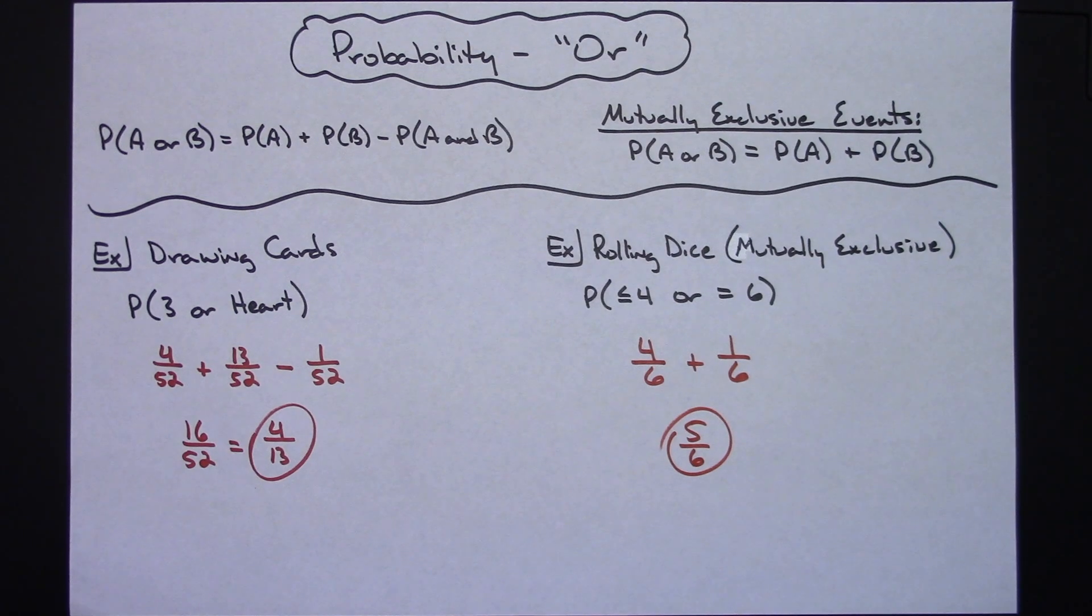So definitely two just really straightforward easy examples dealing with that OR and dealing with the two different types of OR formulas, one being mutually exclusive and the other one not.